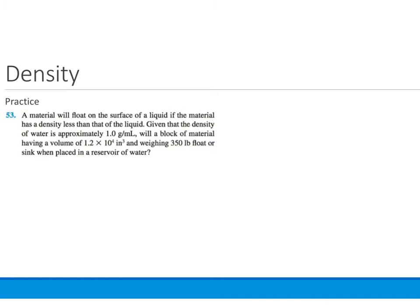So let's practice. A material will float on the surface of a liquid if the material has a density less than that of the liquid. Given that the density of water is approximately 1.0 grams per milliliter, will a block of material having a volume of 1.2 times 10 to the 4th cubic inches and weighing 350 pounds float or sink when placed in a reservoir of water? The first thing we should do is pull out all relevant information. The mass is 350 pounds. The volume is 1.2 times 10 to the 4th cubic inches.